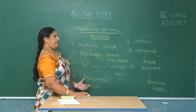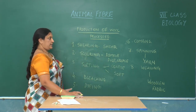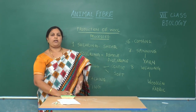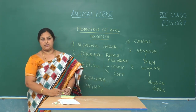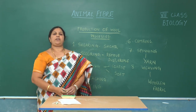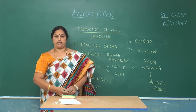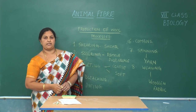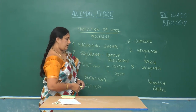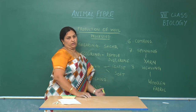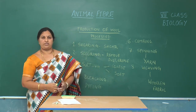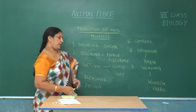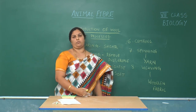What is the similarity between silk fibre and woolen fibre? Both are obtained from animals and they are rich in proteins. The proteins present in silk fibre are fibroin and sericin, while the protein present in woolen fibre gives strength to the fibre, and finally helps to produce the woolen fabric for human use.